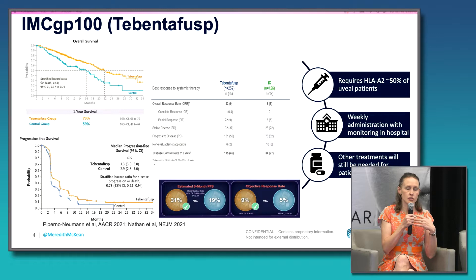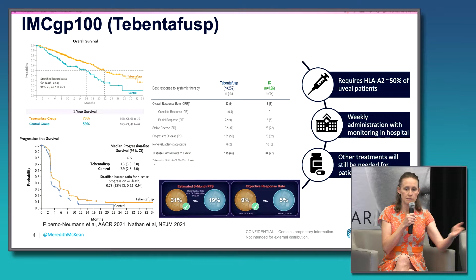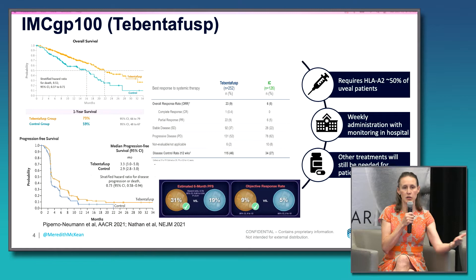One approach is that patients will get their first three doses at a specialized clinic, since the clinic staff and hospital staff are trained and treat a number of patients on clinical trials with similar side effects. After those first three doses, patients can transfer back to their local clinic closer to home and receive additional treatments as an outpatient. While everyone was excited to see the first FDA-approved treatment for uveal melanoma, we all know this is just the beginning — the first milestone in what we hope to be continued achievements in determining better treatments for patients.